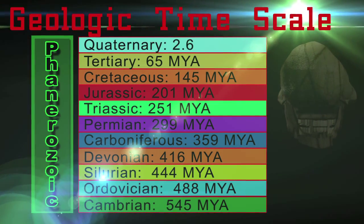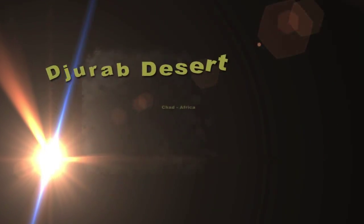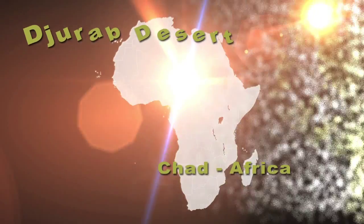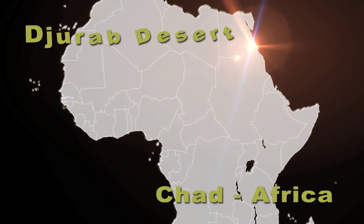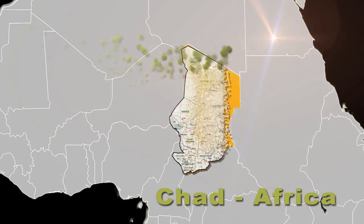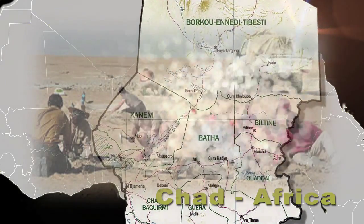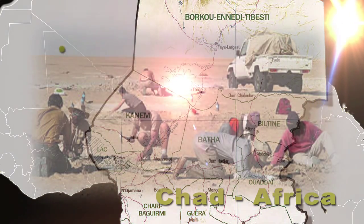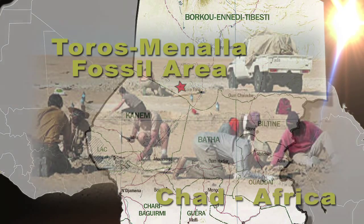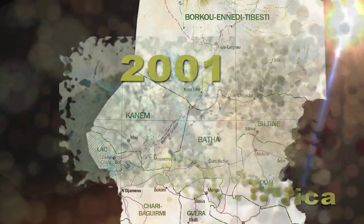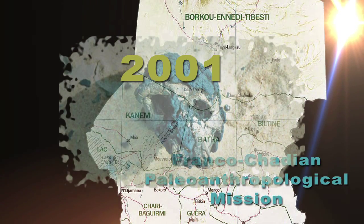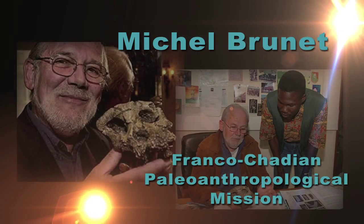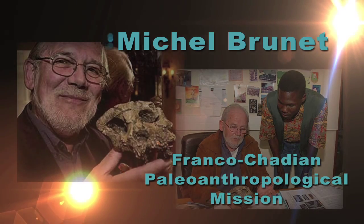Let's start to look at the fossils of our human ancestors with a trip to the Jurab Desert of Chad, where fossils of one of our most ancient ancestors have been found. The Jurab Desert is located in northwestern Chad in northern Africa and is part of the Great Saharan Desert system. The specific area where our potential ancestors' fossils were discovered is called the Toros-Menalla fossil area. In 2001, members of the Franco-Chadian paleoanthropological mission, led by Michel Brunet, working in the Toros-Menalla region discovered hominid fossils of a new species which they called Sahelanthropus tchadensis.